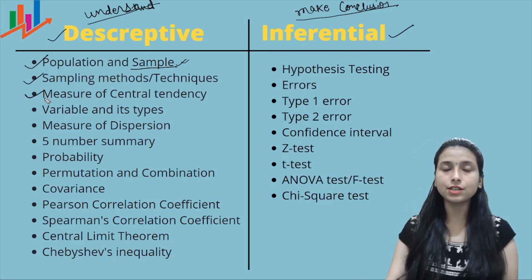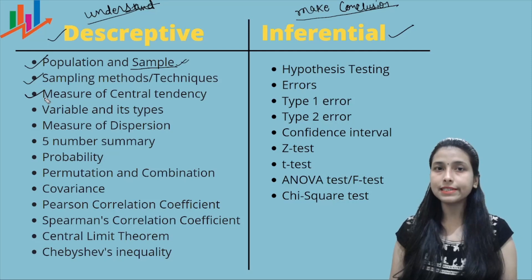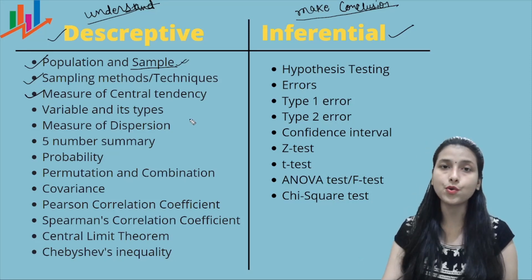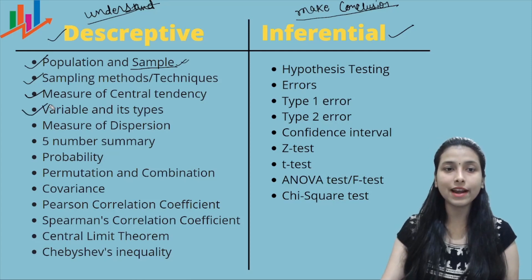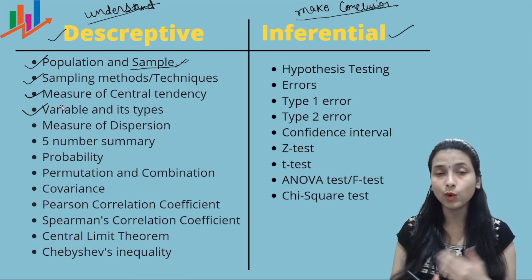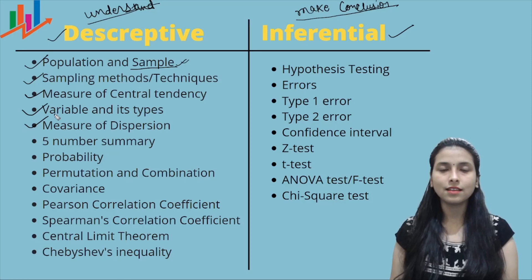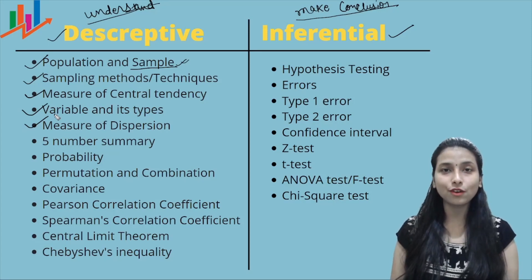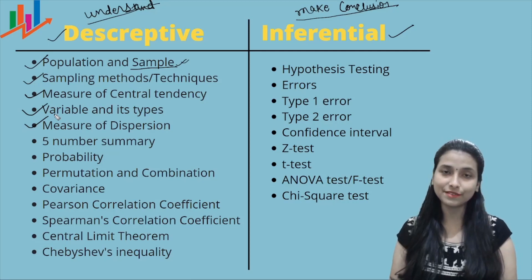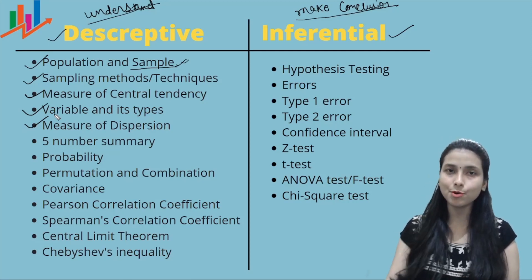The next topic is measures of central tendency. There are three measures: mean, median, and mode — we will discuss each one in coming videos. After that is variables and their types, which is also a very important topic. Then there are two types of measures of dispersion: variance and standard deviation, which are also very important.